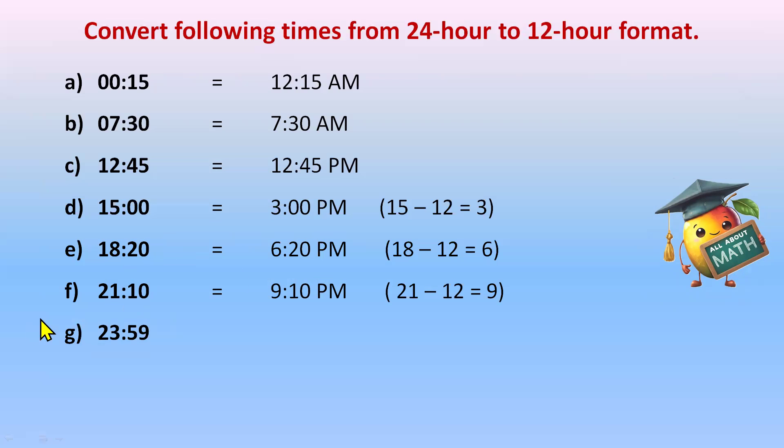23:59, again 23 is more than 12. So 23 minus 12 will give us 11:59 P.M. When we are subtracting we are writing P.M. Exception is for 12.